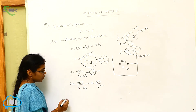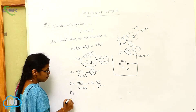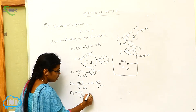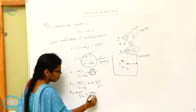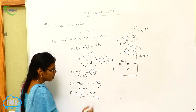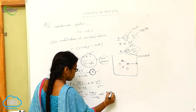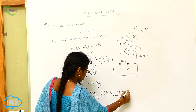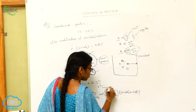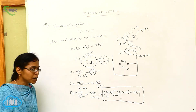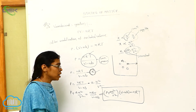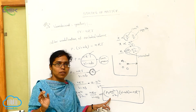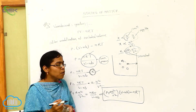Taking this to the left side: P plus a into N squared by V squared is equal to NRT by V minus NB. From this, we can write P plus a into N squared by V squared, into V minus NB, is equal to NRT. This is our Van der Waals equation, which obeys all gases for all conditions.